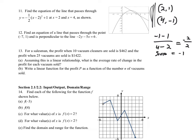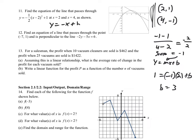With slope negative 1 and using y = mx + b, plug in the point (2, 1): 1 = (negative 1)(2) + b, giving b = 3. The final equation of the line is y = negative x + 3.